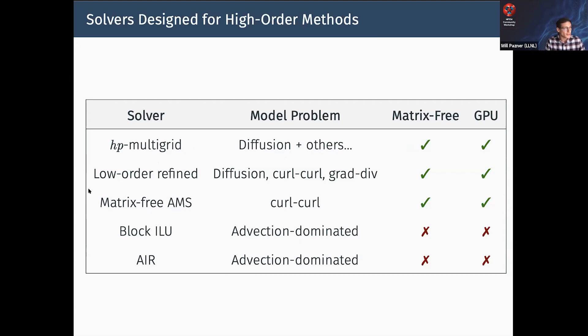We've got low-order refined solvers. The model problems here are H1 diffusion, curl-curl problems in H-curl, and grad-div problems in H-div. These are matrix-free and work on the GPU. For curl-curl, we also have a matrix-free AMS that's a little bit different, and again, that's on the GPU.